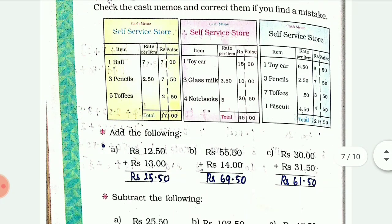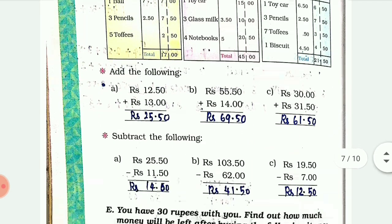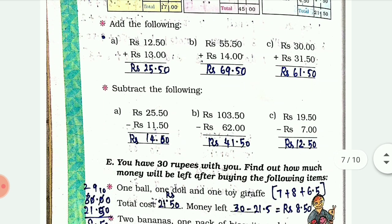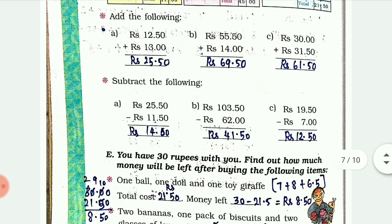Here addition and subtraction are given from the chart. 12.50 plus 13.50 equals 25.50. Next, 55.50 and 14 is 69.50. Then 30 and 31.50 is 61.50. The subtraction is just simpler subtraction - you can try and check the answers.